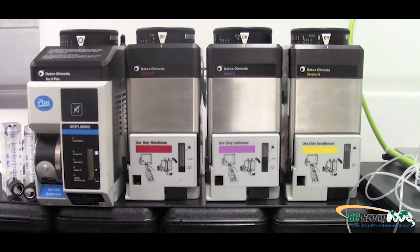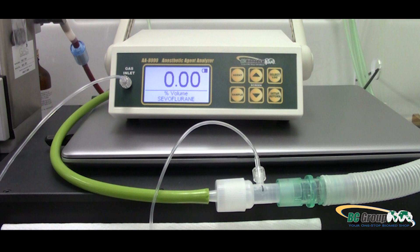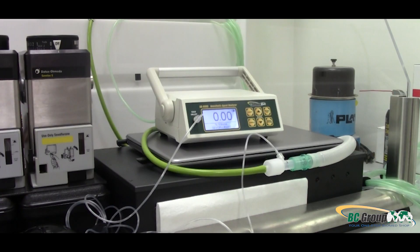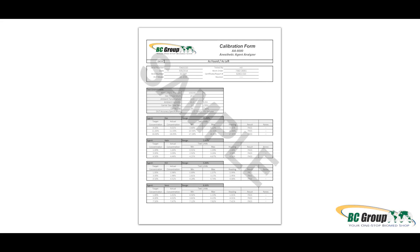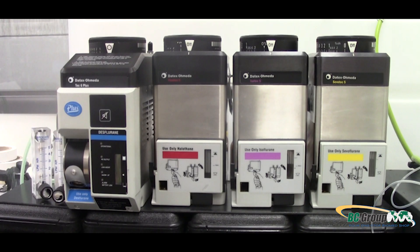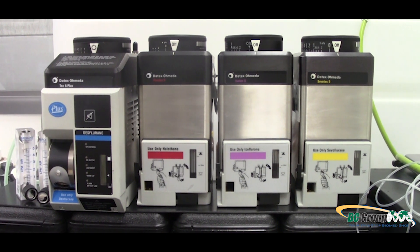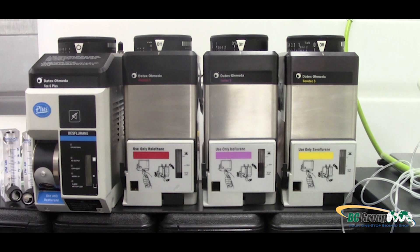To test your anesthetic agents, you will need a sample line, ventilation adapter, scavenger tubing, and the AA8000 Anesthetic Agent Analyzer. The AA8000 includes a 12-point calibration certificate. You will also need a charged anesthetic vaporizer to be tested.